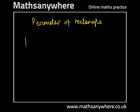Perimeter of a rectangle. Let's take an example. You might have a rectangle that has a width of 3 centimetres and a length of 4 centimetres.